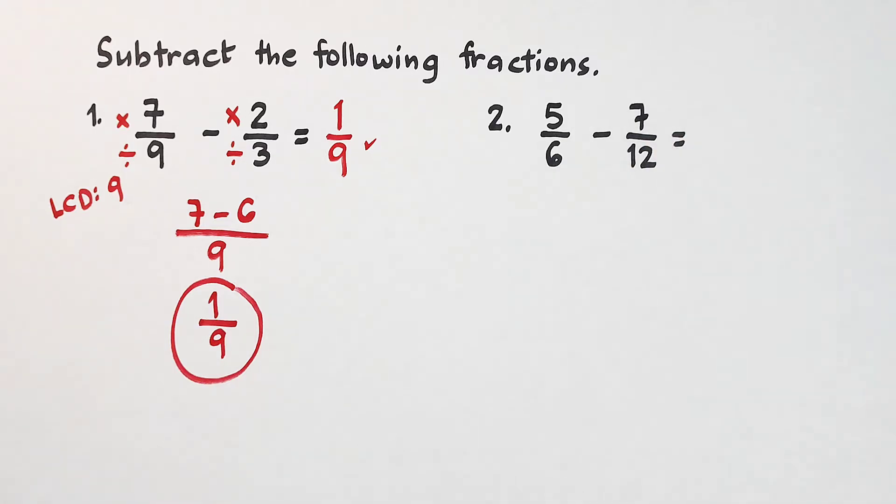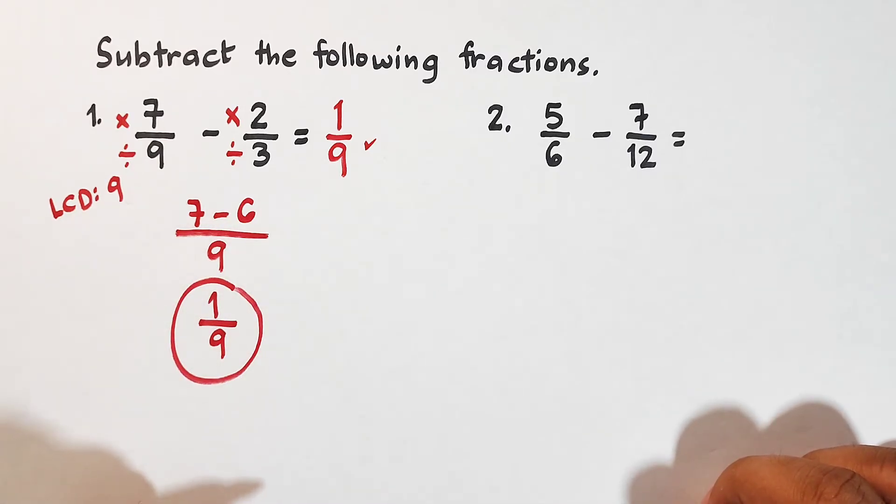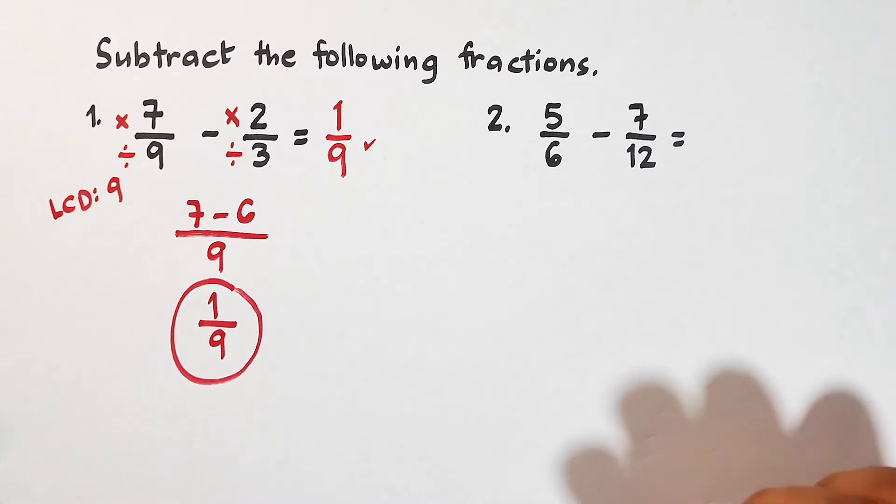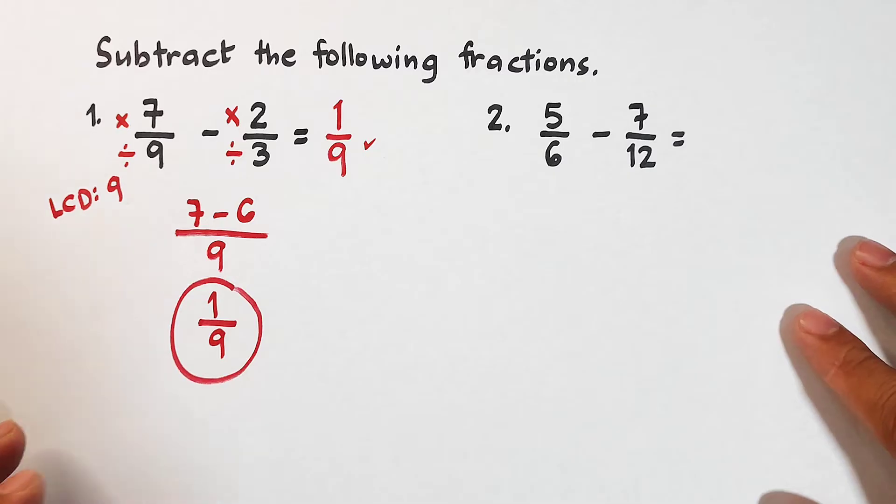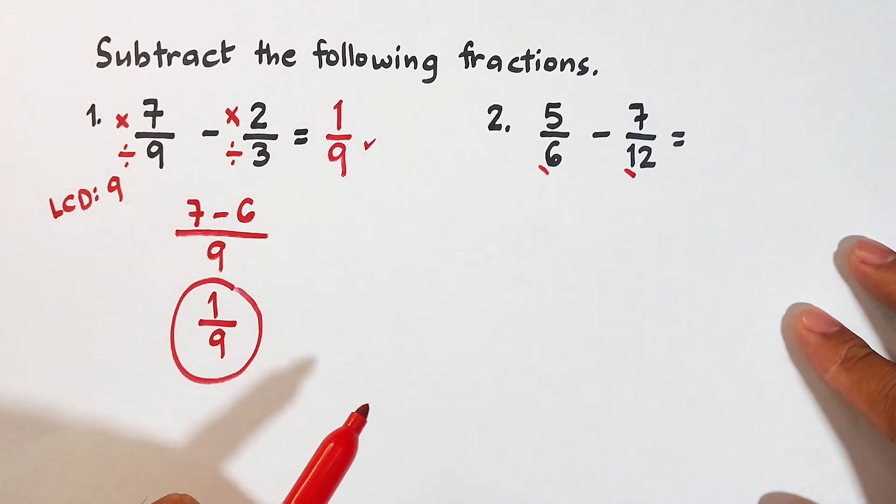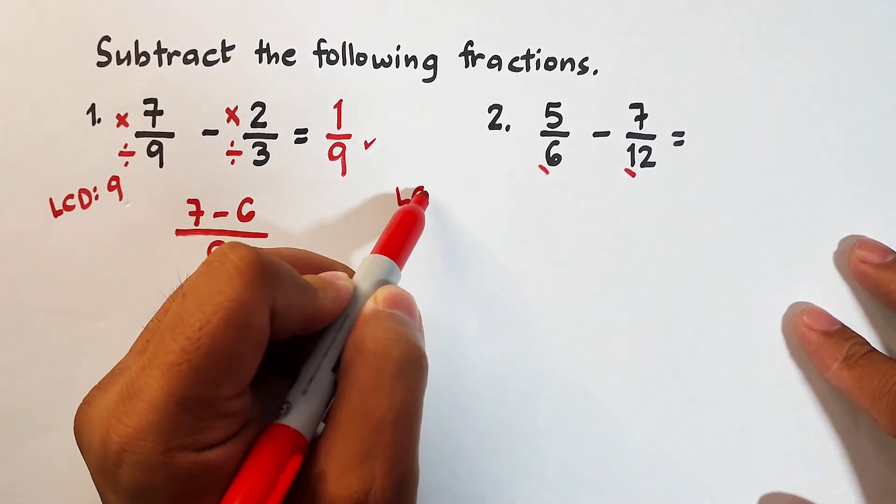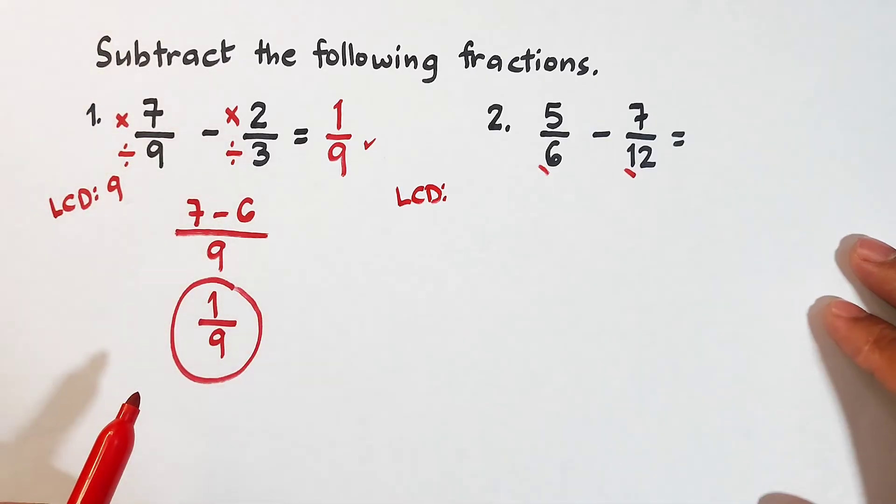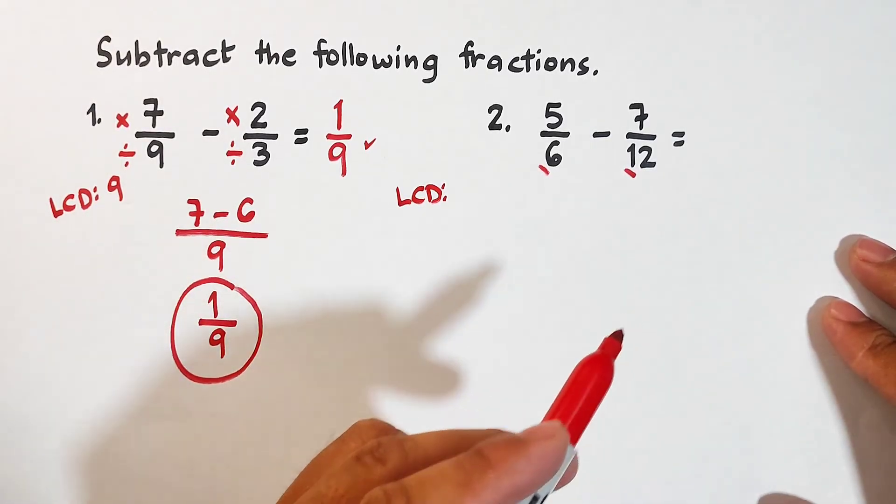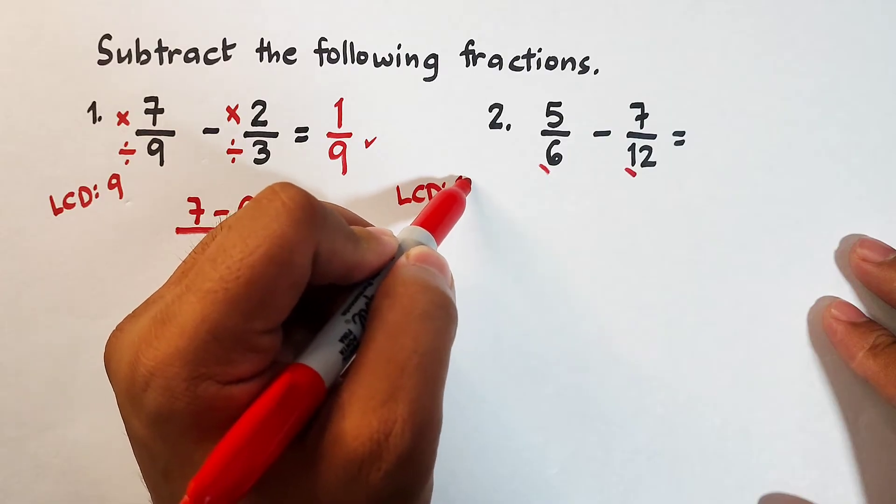Now, let's move on with number 2. You can pause the video for a while and try it on your own. As you can see, we have here 6 and 12 as our denominator. Now, let me ask you, what is the LCD of these numbers, 6 and 12? Very good. The least common denominator is 12.